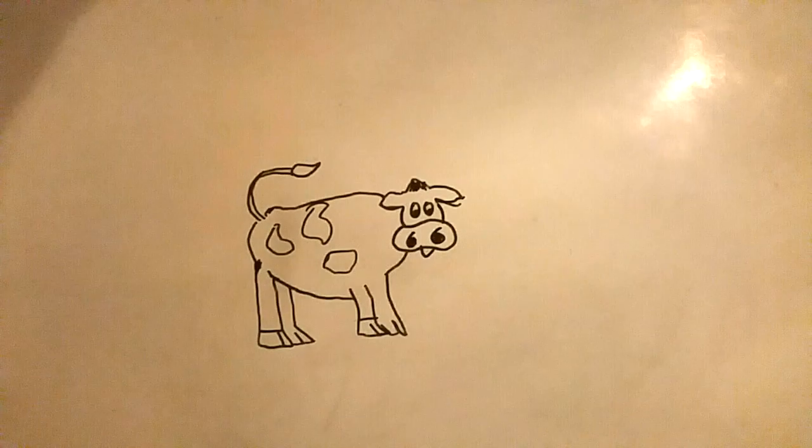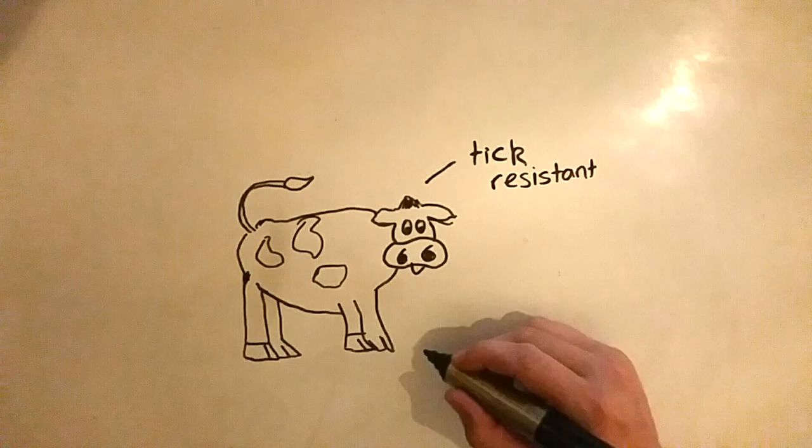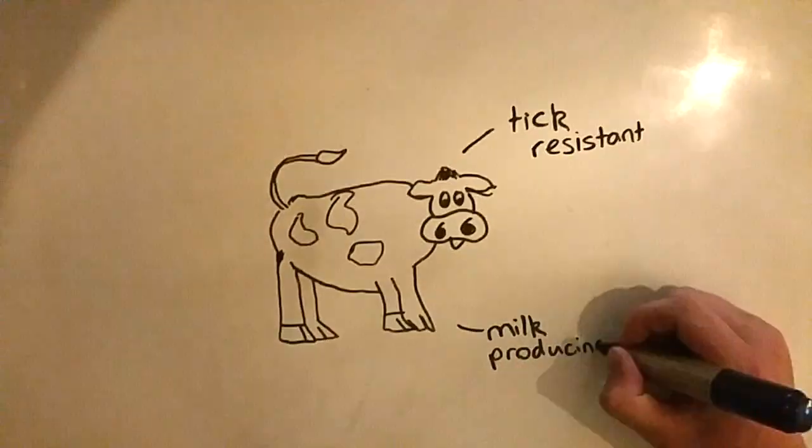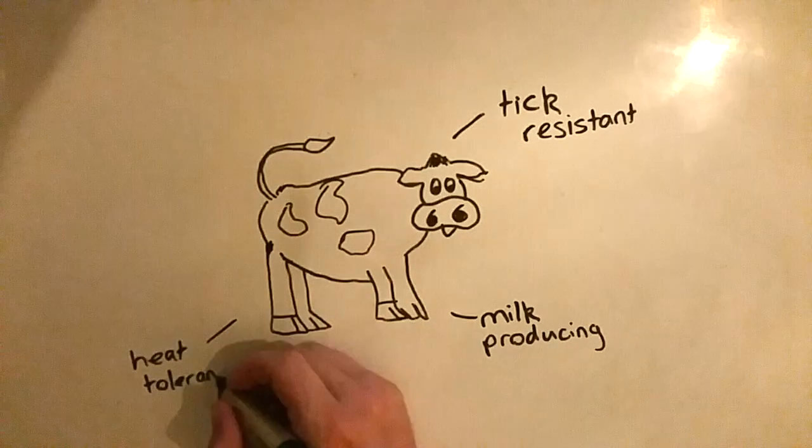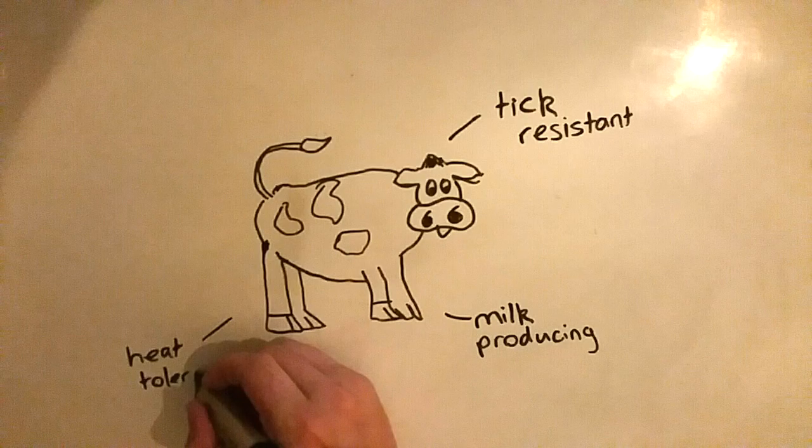Those traits include the ability to tolerate heat by means of sweating and the ability to discard ticks from its loose skin, which came from the Pakistani, Sahiwal and the Red Sindhi. It is similar in shape and color to Jersey cattle.